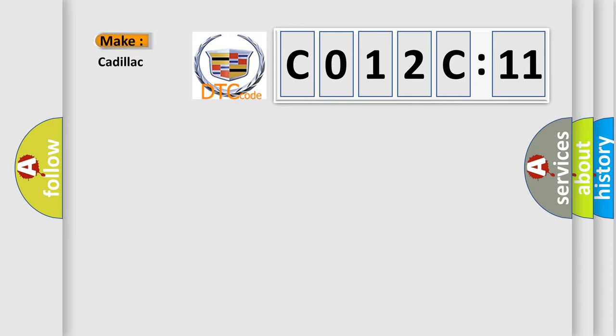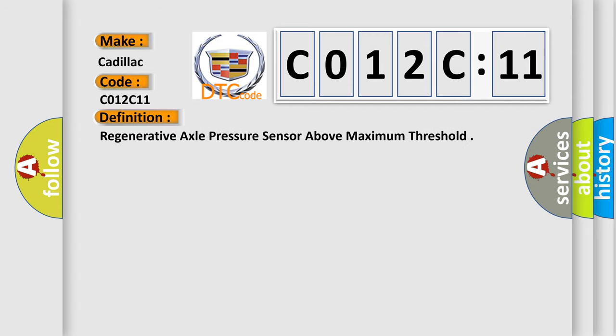what does the diagnostic trouble code C012C11 interpret specifically for Cadillac car manufacturers? The basic definition is: Regenerative axle pressure sensor above maximum threshold.